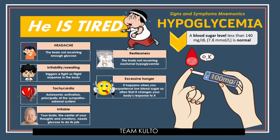I is for Excessive Hunger — hunger pangs. People experiencing hypoglycemia feel very hungry. This happens because low blood sugar causes the body to release stress hormones such as epinephrine. Epinephrine is responsible for early warning signs like hunger and shakiness — hence excessive hunger in hypoglycemia.